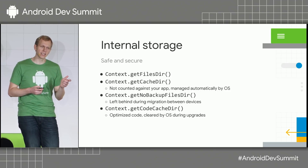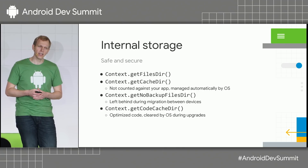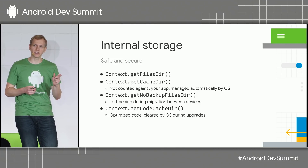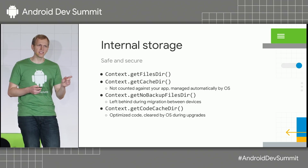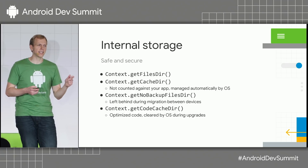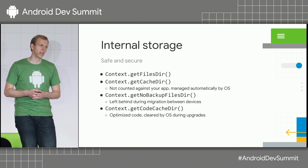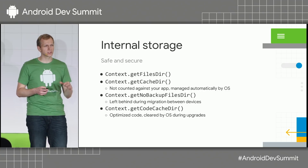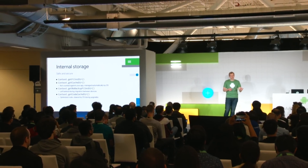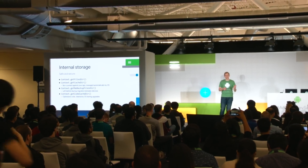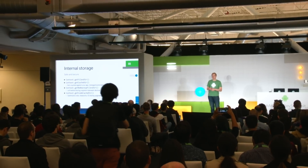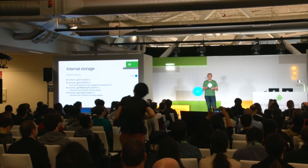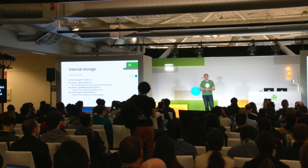One that's slightly different is getCacheDir. Files that you store in that location — the disk space is not counted against your application. The reason for that is Android reserves the right to go in and delete some of those files if the user needs that disk space elsewhere. So it's a trade-off; it's a two-way street.